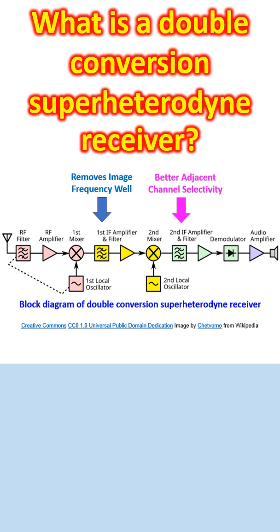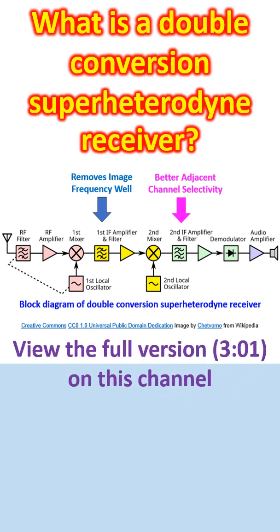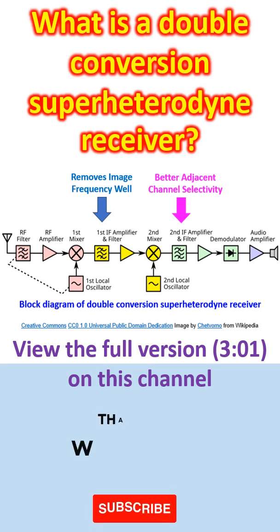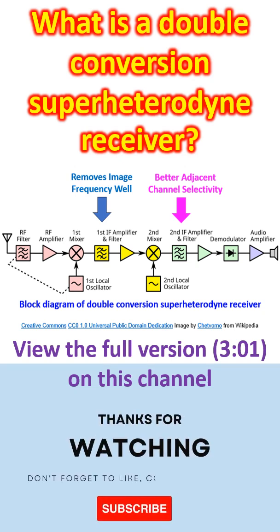A receiver with two frequency conversions and two intermediate frequencies is known as a double or dual conversion superheterodyne receiver. One with three levels of conversion and three intermediate frequencies is known as a triple conversion superheterodyne receiver.